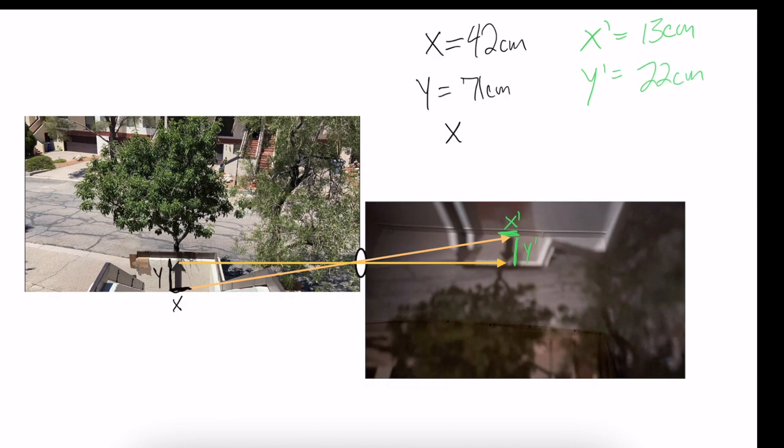If I divide X, the original width, by the projected width, I get 3.23. If I do the same with the heights, Y divided by Y prime, I get a ratio of 3.22. Now there's a slight difference here, but they are so very close. And what this is telling us actually is that we have similar triangles.